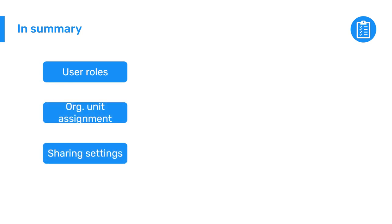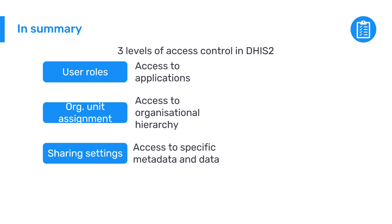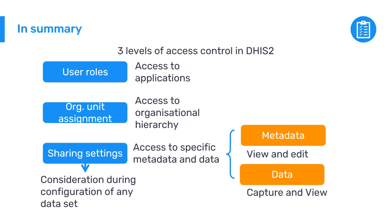In summary, user roles, organization unit assignment, and sharing settings are three levels of access control in DHIS2. User roles control user access to applications. Organization unit assignment controls access to the organizational hierarchy. Sharing settings provide more granular control, allowing specific users or user groups access to specific metadata and data. Metadata sharing allows users or user groups to view and edit metadata, while data sharing determines permissions to capture and view particular data. Sharing settings require consideration during configuration of any dataset in DHIS2; if not correctly configured, users may not be able to access the dataset to view or enter data.